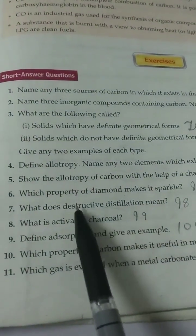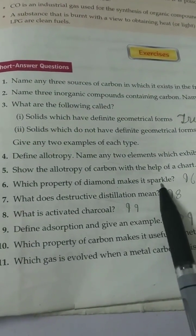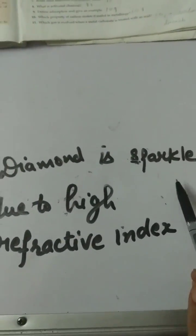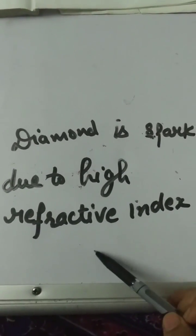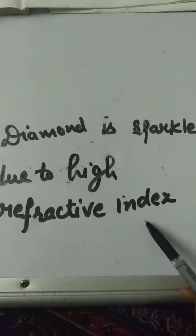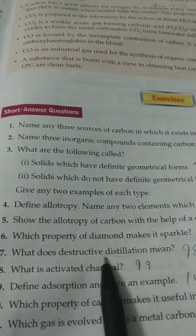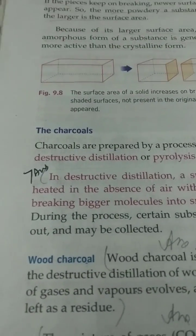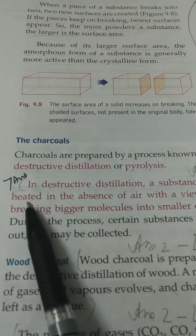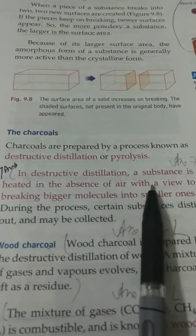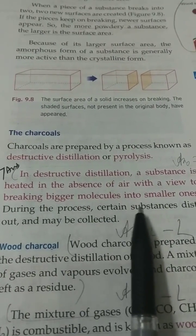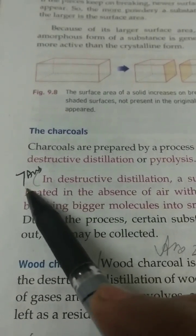Sixth, which property of diamond makes it sparkle? Answer: diamond sparkles due to high refractive index. Seventh, what does destructive distillation mean? See page number 98. Eighth, in destructive distillation, a substance is heated in absence of air with a view to breaking bigger molecules into smaller ones. This is the seventh answer.